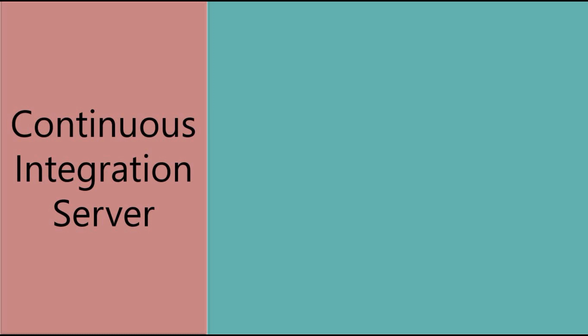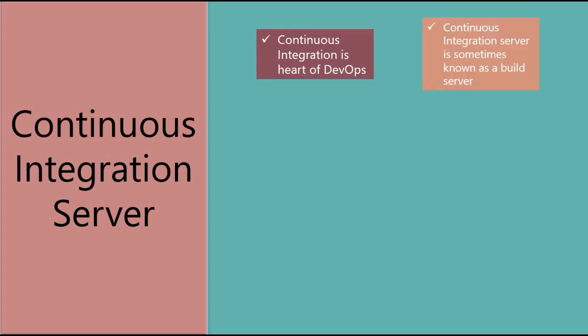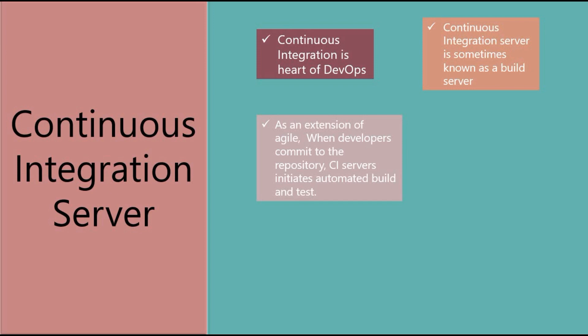Let me talk a little about the continuous integration server. Continuous integration is the heart of DevOps — it's also called a build server, where you take source code, whether Java, .NET, Node.js, or others, and build it to get an output. It's more of an extension of agile. When developers commit to the repository, the CI server initiates an automated build and test.